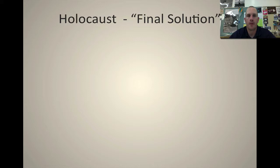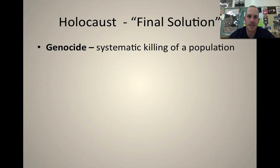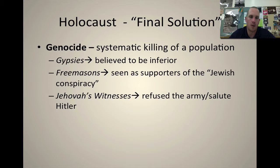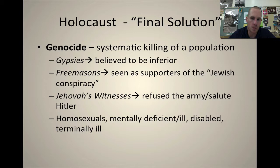The Holocaust — the final solution. Genocide, very basically, which you should remember from world history, is the systematic killing of a population. The gypsies were part of this; the Germans believed they were inferior. Freemasons were seen as supporters of the Jewish conspiracy. Jehovah's Witnesses were persecuted for refusing to salute Hitler and refusing the army. Homosexuals, the mentally ill, disabled, and terminally ill patients were also targets. So if you had a limp, more than likely you'd be deemed unfit for labor and sent to the gas chamber or the execution line.